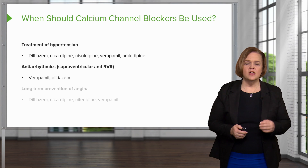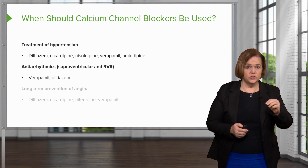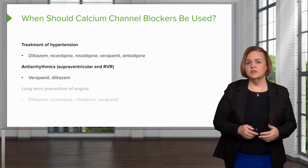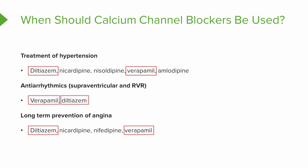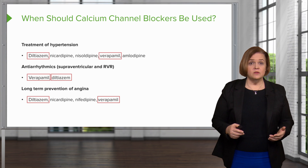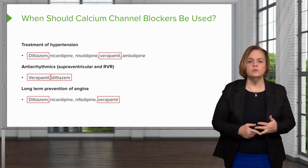Two of those drugs are the same across categories. Verapamil and diltiazem are medications that actually lower your heart rate, which is why they're really useful with rapid dysrhythmias. For long-term prevention of angina, the list includes diltiazem, nicardipine, nifedipine, and verapamil. Look at all three categories — is there any medication in all three? Yes, there are two: verapamil and diltiazem. Circle those two to help your brain see the pattern. So calcium channel blockers can be used for high blood pressure, fast abnormal heart rhythms, and long-term prevention of angina.